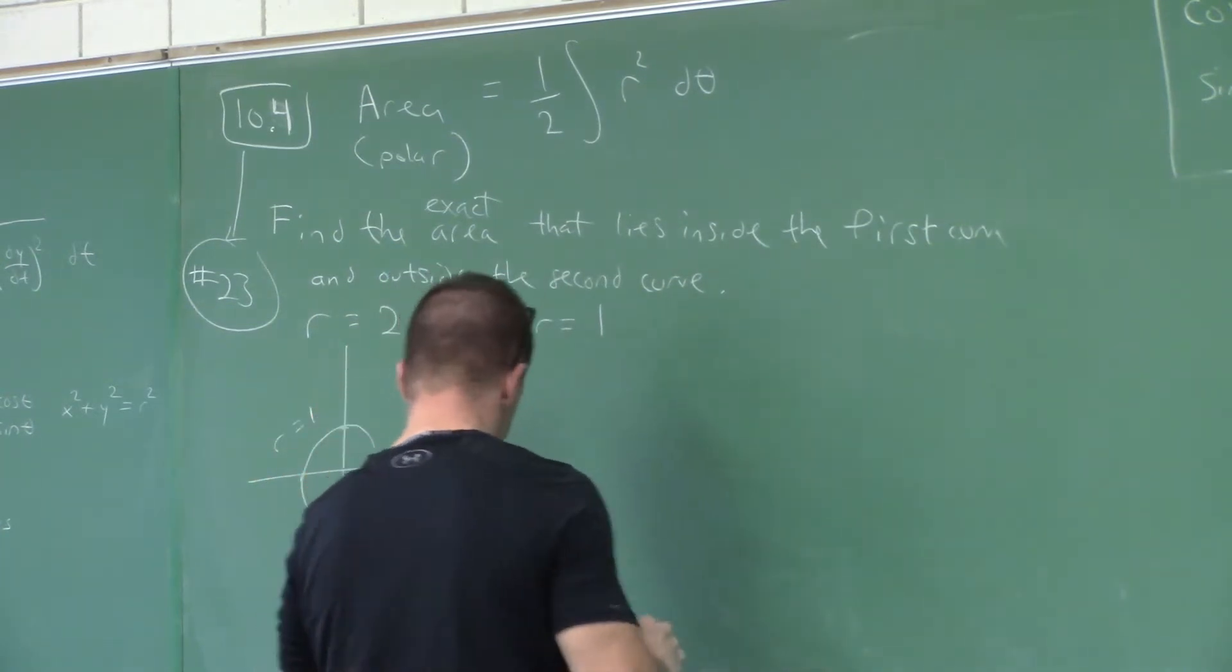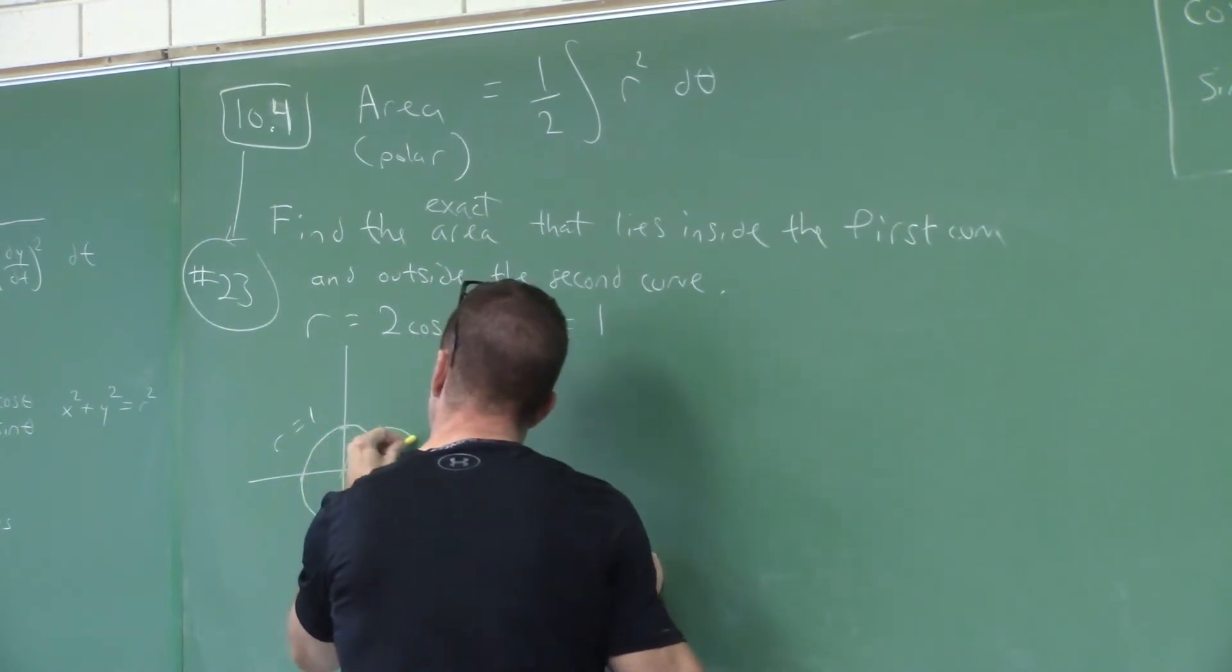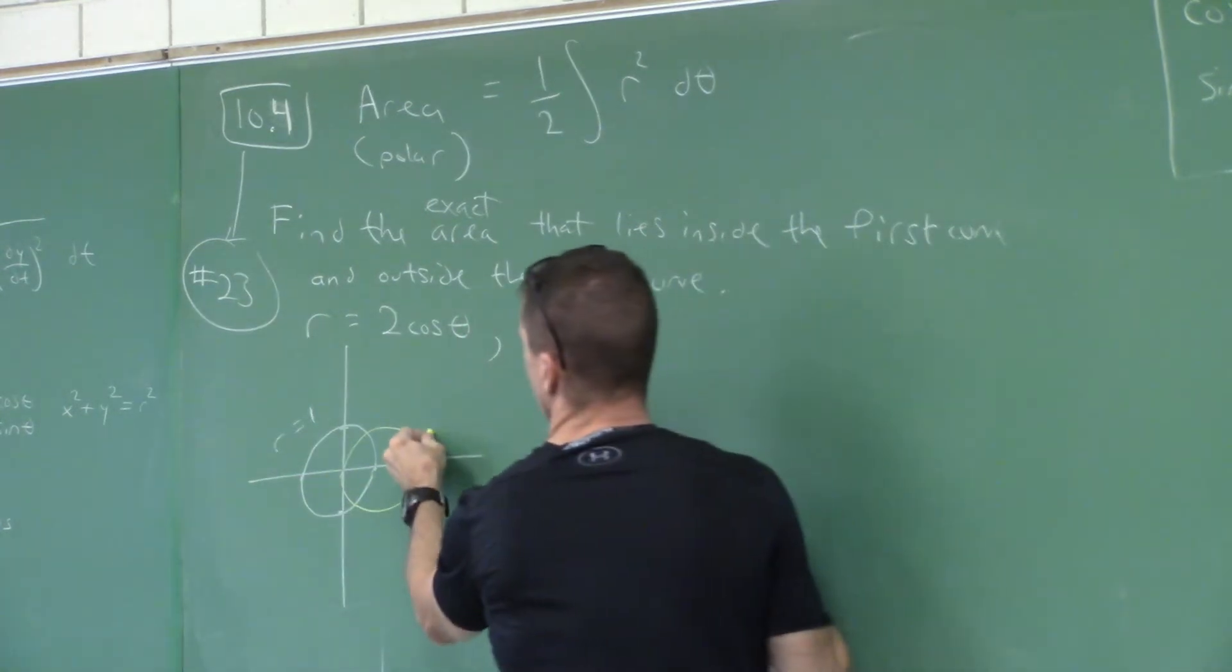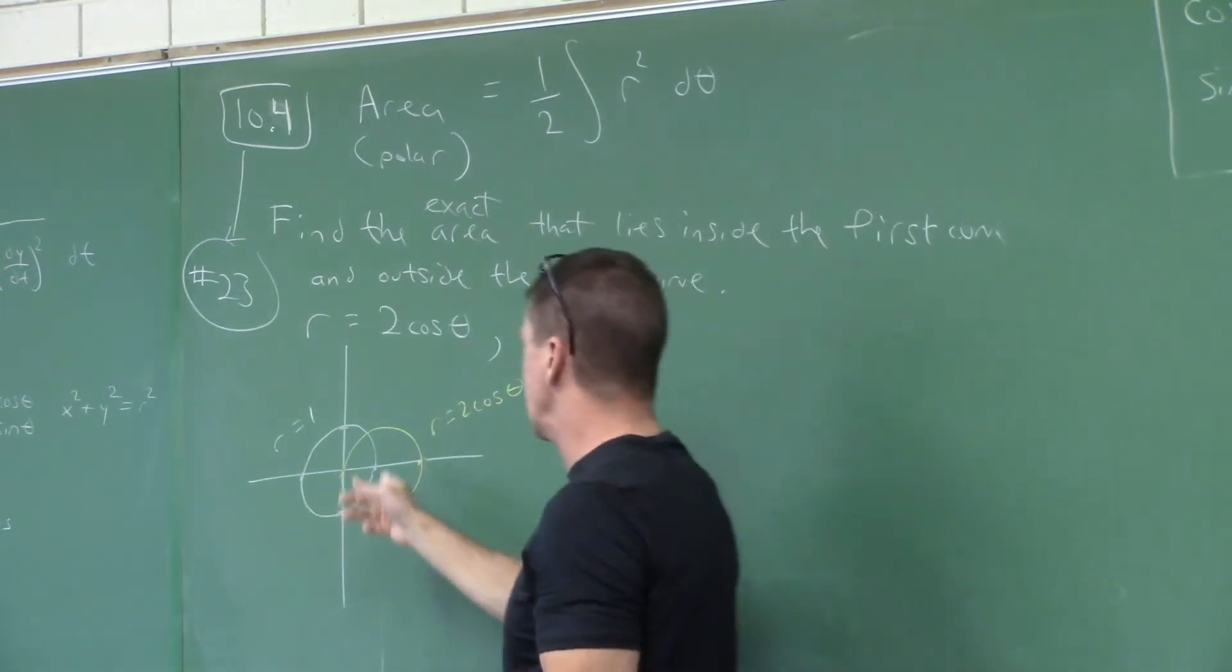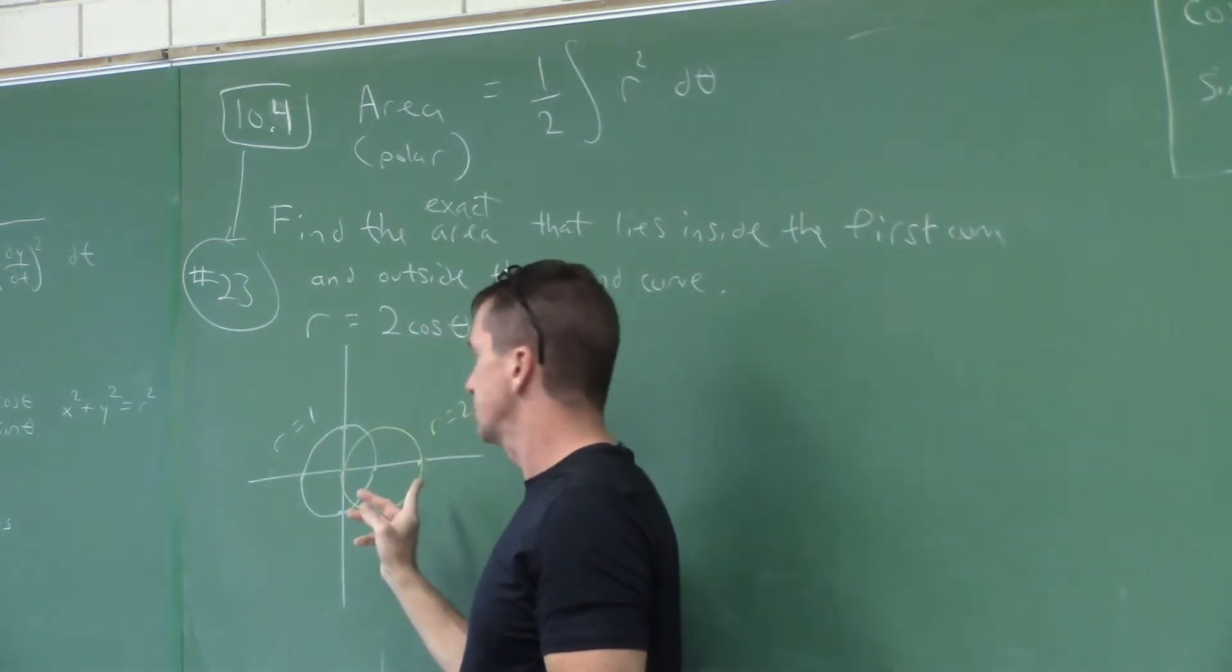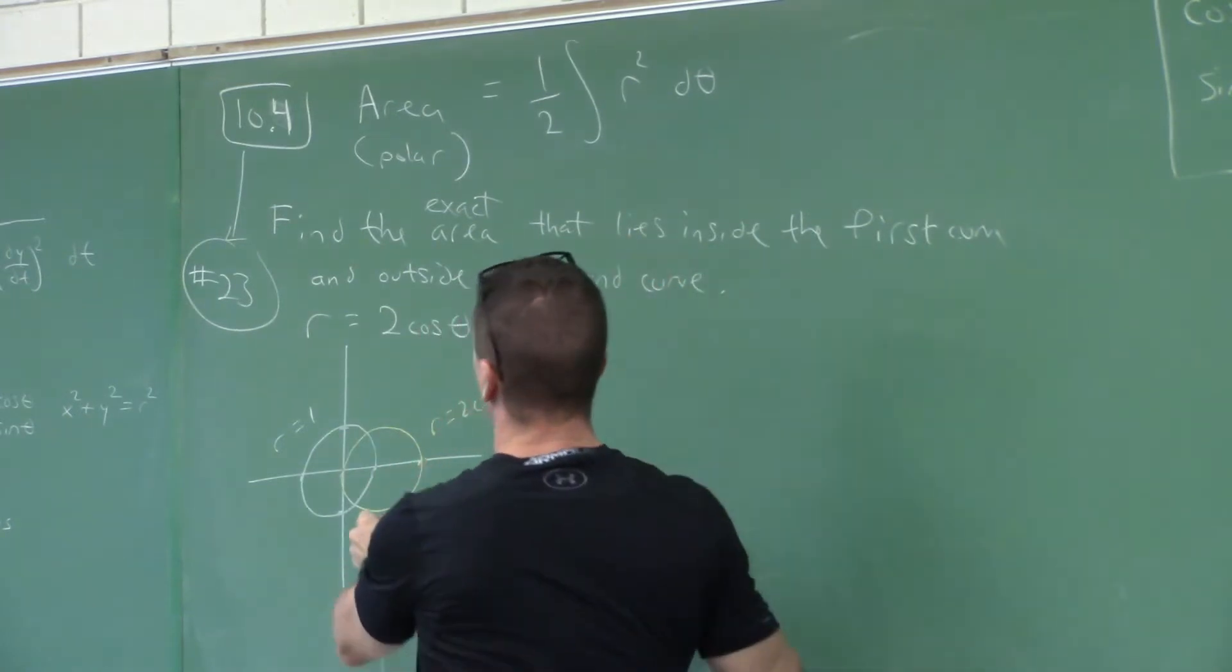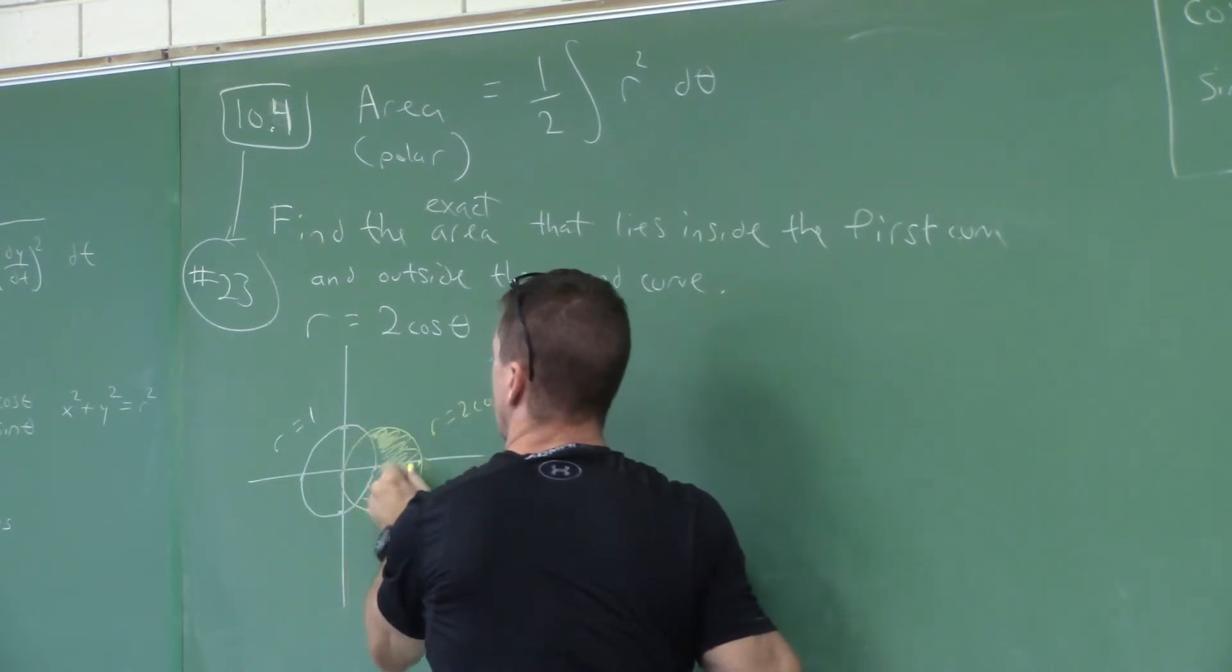You know what this curve looks like? It's very similar. Here, it's a circle, but it's a shifted circle. And that's r equal to two cosine theta. My question is, how can we find the area that's inside this curve but outside the curve of radius one?